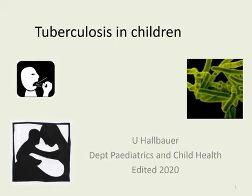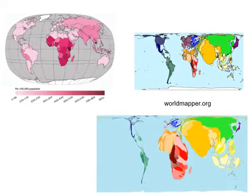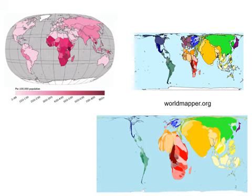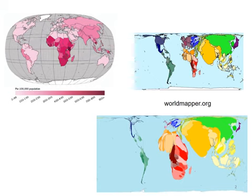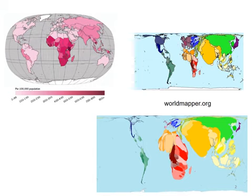Tuberculosis in children is a really important topic. If I ask any medical student whether they've seen a child with TB in the wards, everybody would say yes. This is a really old slide, about 15 years old. The map on the top left shows tuberculosis around the world — the darker pink, the more tuberculosis. The maps on the right are from worldmapper.org, which shows the world not in terms of square kilometers but in terms of population number. You can see which areas of the world bulge — Africa is not that huge, but once you look at sub-Saharan Africa from the point of view of tuberculosis, it starts to get a bulge. The other areas bulging are India and Southeast Asia.